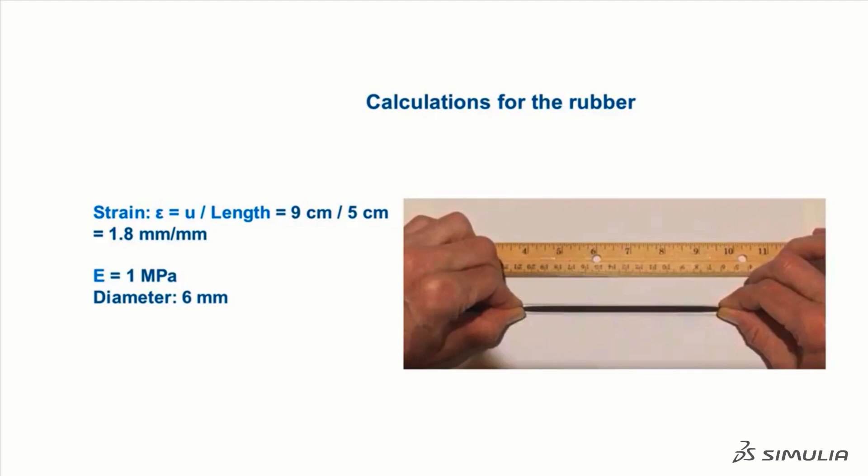The elastic modulus of the rubber is 1 MPa, and the diameter of the rubber cylinder is 6 mm. Using this information and the relationship between stress and strain, we can calculate that the stress in the rubber is 1.8 MPa. We can also use the equation for stress to calculate the force that we applied to the cylinder.